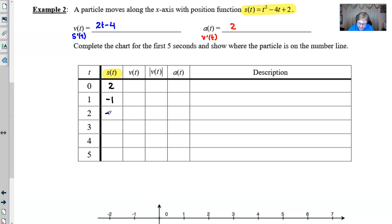Got to think about these. 3 would give me 9 minus 12 plus 2, which is negative 1. 4 would be probably an easier one. 16 minus 16 plus 2 is 2. And 5 would give us 25 minus 20 plus 2. So I'd have a position of 7.